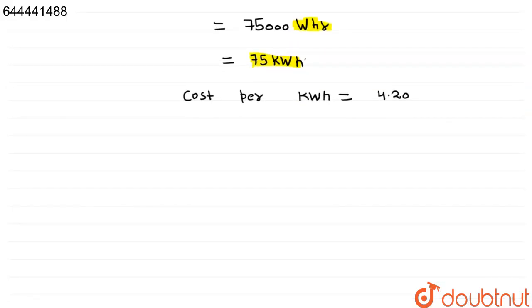So we have to find the total cost. Total cost is equal to 4.20 is for 1 kilowatt hour, and we have 75 kilowatt hour, into 75.